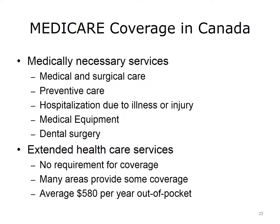Canada's provincial and territorial health care plans must pay for services considered medically necessary. These include preventive care, hospital stays due to illness or injury, medical equipment, and dental surgery. The Canada Health Act does not require that provinces and territories pay for so-called extended health care services, which means services not considered medically necessary. These services can include prescriptions, eye care, and routine dental care. Most provinces and territories choose to fully or partially cover some of these services, although coverage options vary by region. On average, each Canadian spends $580 per year on out-of-pocket health care expenses not covered by Medicare.